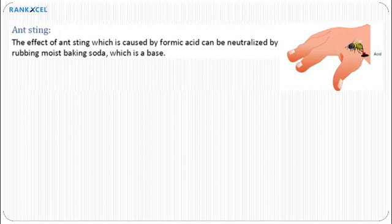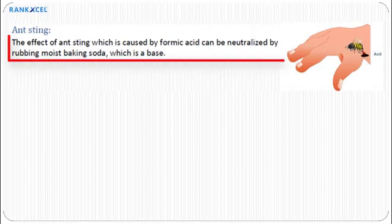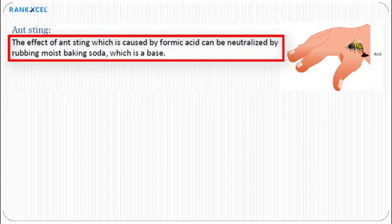Ant sting: The effect of an ant sting, which is caused by formic acid, can be neutralized by rubbing moist baking soda, which is a base.